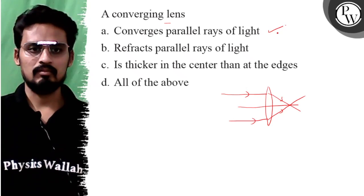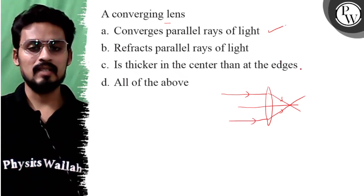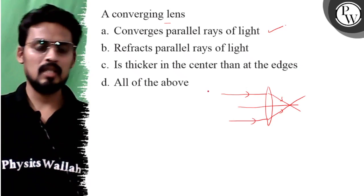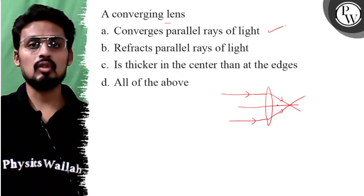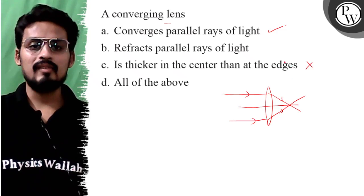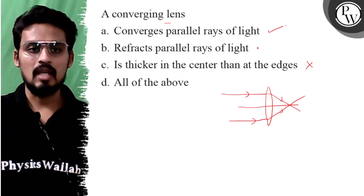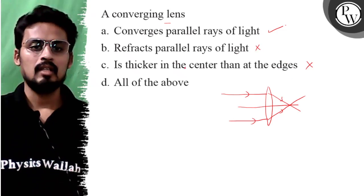Refracts parallel rays of light, is thicker in the center than at the edges - in this case it is possible. But there could be a case where a converging lens has some other shape, so I cannot say it. Refracts parallel rays of light is not appropriate, so it will be wrong.